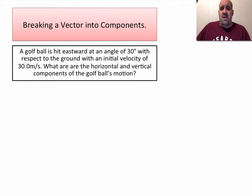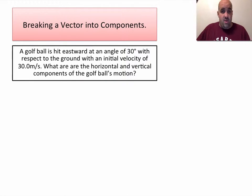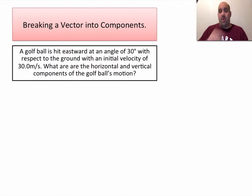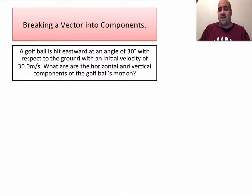Hi, Mr. Zappone here, and today we're going to look at breaking a vector into components. We've used the tail-to-tip method and parallelogram method to turn components into a resultant vector. Now we're going to do the opposite — take a resultant vector and break it into its horizontal and vertical components, because this is going to be very useful when we are solving projectile motion problems.